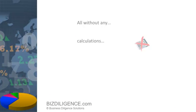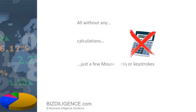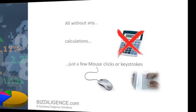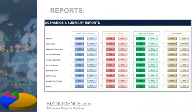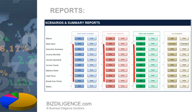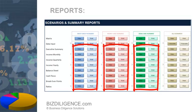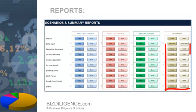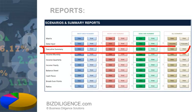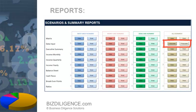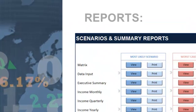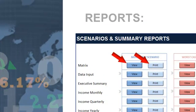Again, all without any calculations — just a few mouse clicks or keystrokes. To see the results in great detail, you can choose any of the 33 reports: 7 for each scenario, 7 comparing the scenarios, 4 executive summaries, and an assumptions report. Each can be viewed or printed.